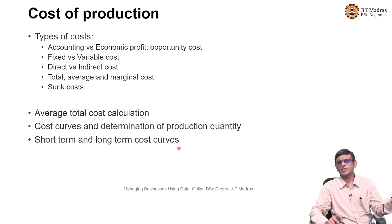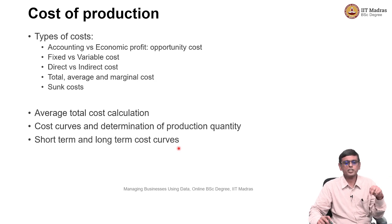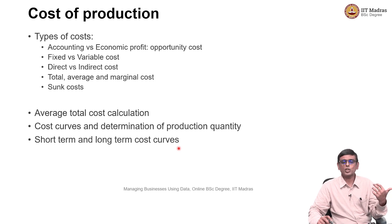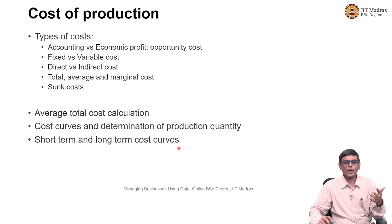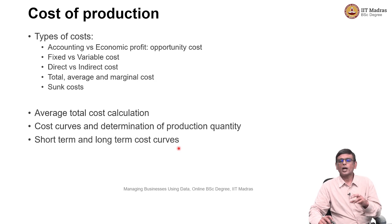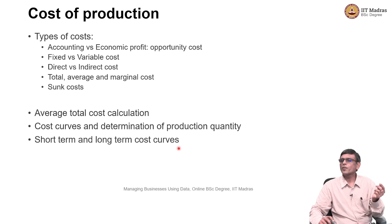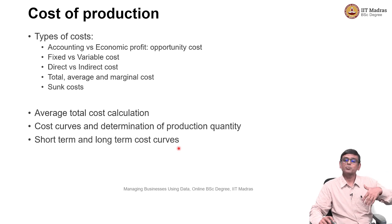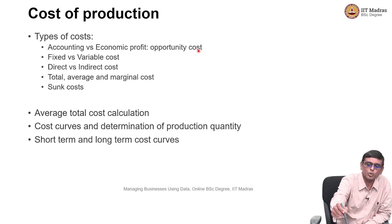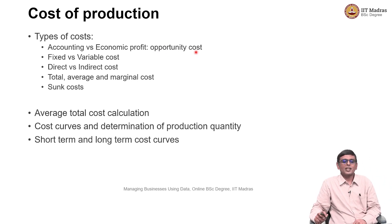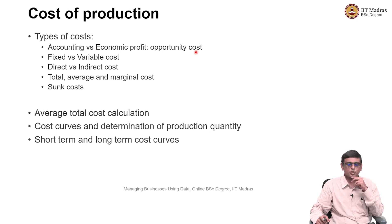The other side involves production. When you do production, you can look at production costs — which can be either accounting costs or economic costs. When you calculate costs the economic way, you also incorporate opportunity cost — you could have used the money to do something else, so you look at whether the money has been deployed correctly. There is also the idea of economic profit versus accounting profit, which are different.